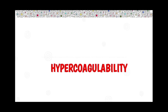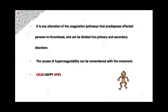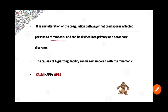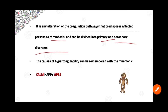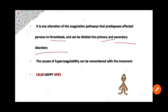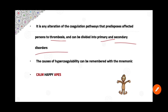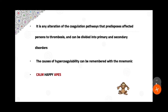The third abnormality is hypercoagulability — an alteration of coagulation pathways that predisposes affected persons to thrombosis. It can be divided into primary and secondary disorders. There are many factors causing hypercoagulability; to remember them, use the mnemonic: CALM HAPPY APES.